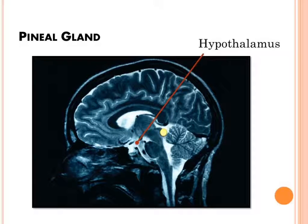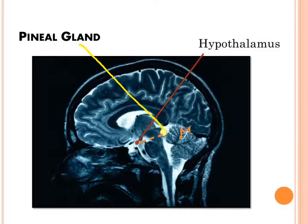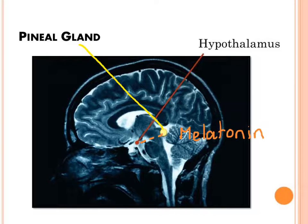The SCN sends messages to an endocrine gland called the pineal gland, and it releases the hormone melatonin at night. Melatonin secretion induces drowsiness and creates the biological conditions needed for sleep. Melatonin is released following a 24-hour cycle with the same characteristic peak and trough each day, and lower melatonin production in the morning creates the right conditions for waking.